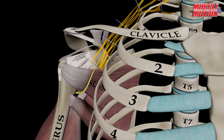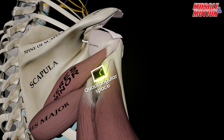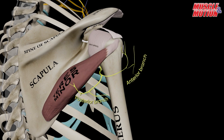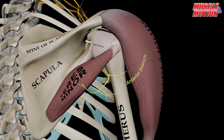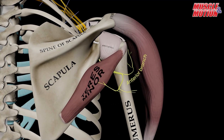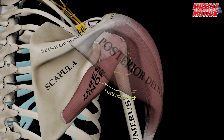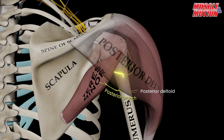It courses anterior to the subscapularis muscle and enters the quadrangular space. From there, it divides into two branches. The anterior branch winds around the surgical neck of the humerus to innervate the deltoid, while the posterior branch supplies the posterior deltoid and the teres minor.